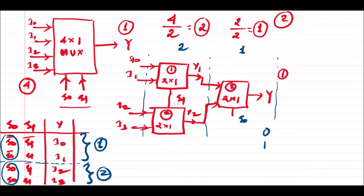Verifying the full design: when S1=0 and S0=0, the first multiplexer is activated and I0 is seen at the output. When S1=1 and S0=0, I1 is seen. When S1=0 and S0=1, the second multiplexer is activated and I2 is seen. When S1=1 and S0=1, I3 is seen. This confirms the 4x1 multiplexer is correctly designed using 2x1 multiplexers. In the next lecture we will design an 8x1 multiplexer using 2x1 multiplexers.